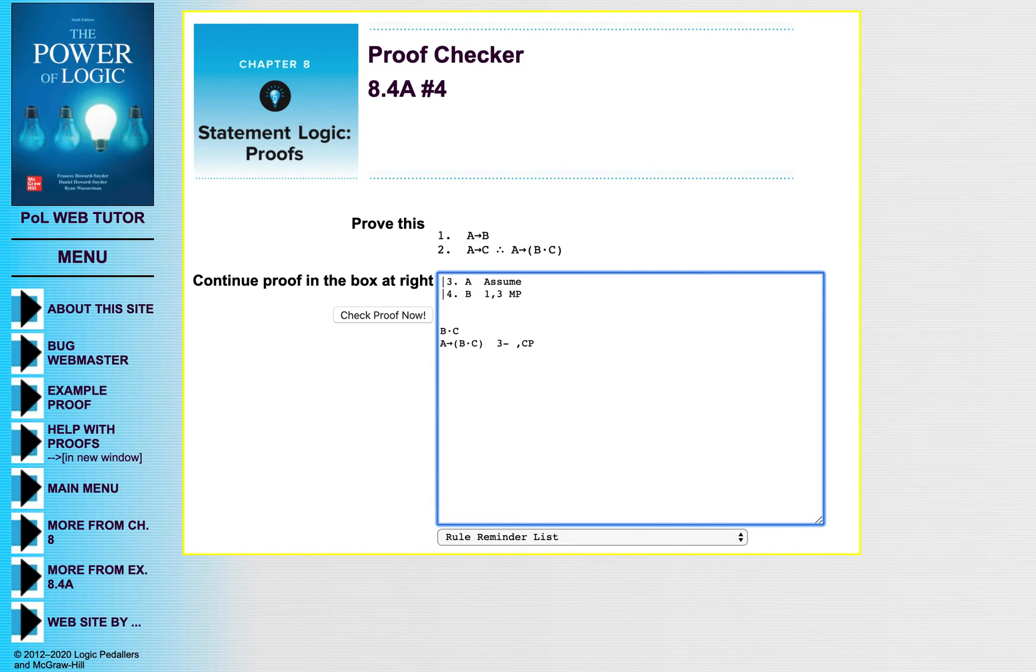Alright, next, I'm still in this assumption. So there's my vertical bar for the next line, five. And if I have A, and I have if A then C, then I can get C. So let's get that, C. And then I use two and three. And same rule, modus ponens.